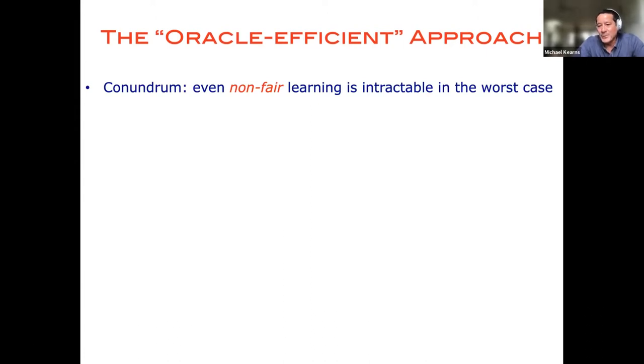So what is the Oracle Efficient Approach? So the Oracle Efficient Approach is designed to address the conundrum that even without any kind of fairness constraints, from a theoretical perspective, machine learning is an intractable problem. So even the simplest kind of learning problem that you can imagine, I give you a bunch of points labeled plus and minus in dimensional space, and I ask you to find the best linear separator, the linear separator that minimizes the classification error. So even that baby machine learning problem is NP-hard already.